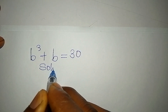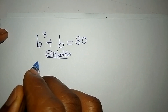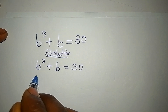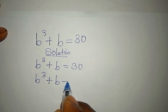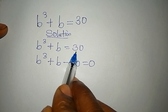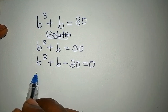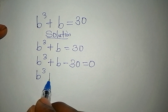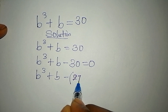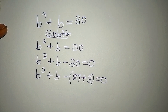Let's provide the solution quickly. We have b³ + b = 30, which gives us b³ + b - 30 = 0. We bring 30 to the left. Now, 30 can be rewritten: it becomes 27 plus 3, so we have b³ + b minus open bracket 27 plus 3, equated to zero.